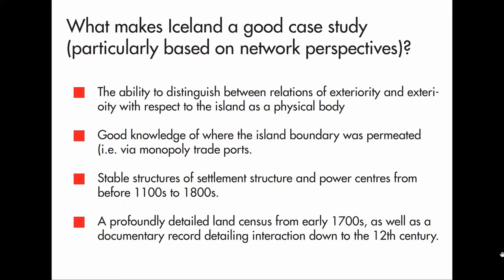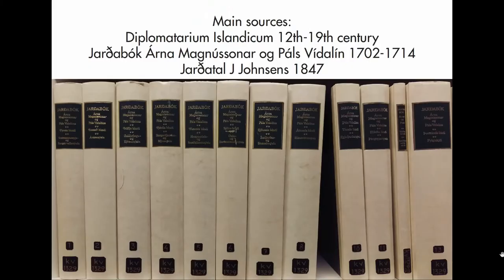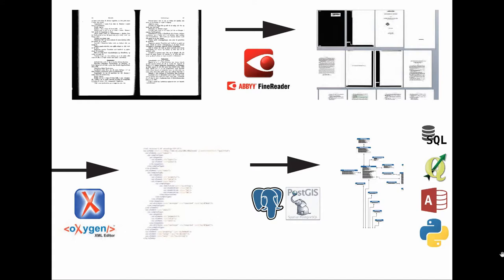We have a nice, closed system with a stable structure, and finally an extremely detailed land census from the early 1700s. Going beyond the site survey database, I've identified each and every one of these farmstead social units that remained the building blocks of society from probably the 10th century into the 19th. The main source — this land census — goes way beyond what we're used to dealing with: they don't just talk about who owns places or how much rent a farm pays, but go into very gossipy detail about frictions between tenant and owner, and community friction.